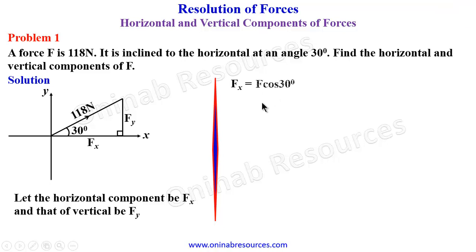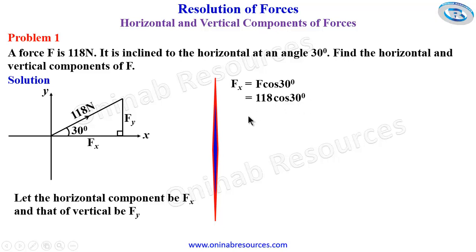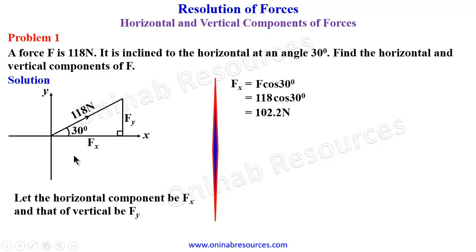So Fx is F cos 30 degrees, where F is 118 newtons. That gives us 118 times cos 30 degrees, which from our calculator is 102.2 newtons. That is the horizontal component, the X component.